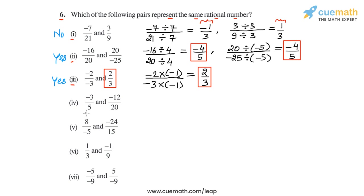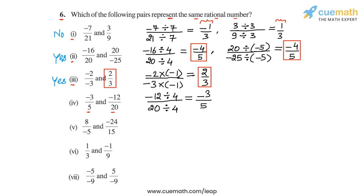In part 4, we have -3/5 and -12/20. The number -3/5 is already in standard form. For -12/20, the HCF of 12 and 20 is 4, so dividing numerator and denominator by 4 gives -3/5. The standard form of the second rational number is -3/5, which matches the first. So this pair also represents the same rational number, and the answer is yes for part 4.